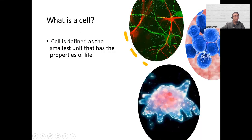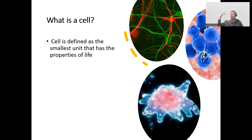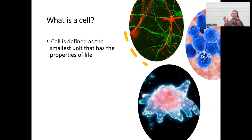A cell is by definition the smallest unit that has the properties of life. We talk about various properties of living things — structure, order, requirement of energy, maintaining homeostasis — and all those characteristics exist at the cellular level. The smallest unit that has all those things is what we define as a cell. Different cells have different shapes and sizes, but they all retain the properties of life.